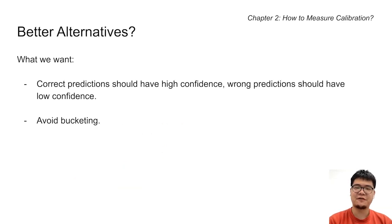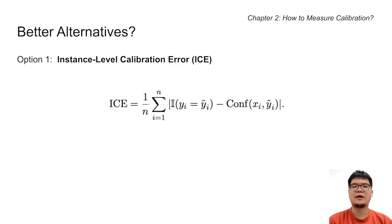Since ECE is flawed, let's come up with some better alternatives. The first idea coming to mind is to avoid the cancellation effect due to bucketing, and instead compute errors at the instance level, where we basically sum the absolute difference between every prediction's confidence and accuracy. We call this instance calibration error, or ICE.